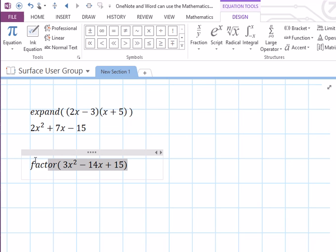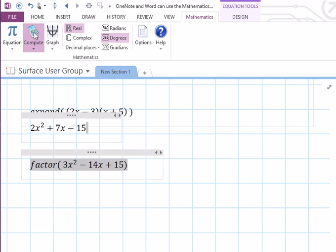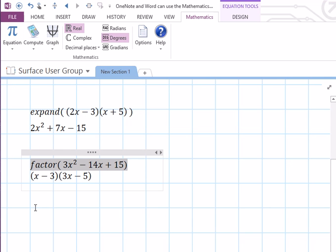And again, same thing, I'm just going to select this expression, and with it selected, I'm going to hit Mathematics, Compute, and Calculate, and it tells me that factor says X minus 3 times the quantity 3X minus 5.